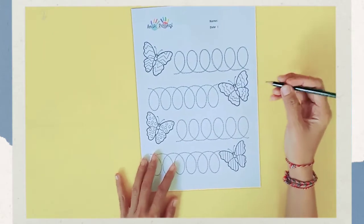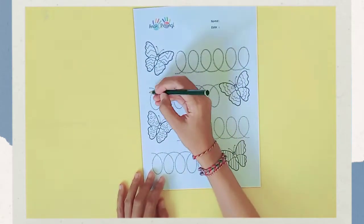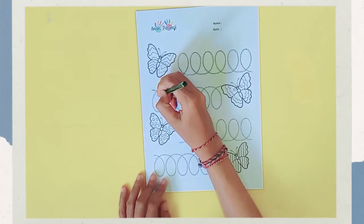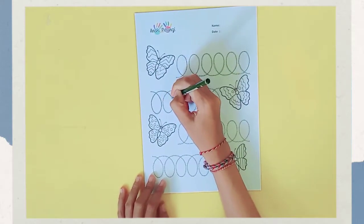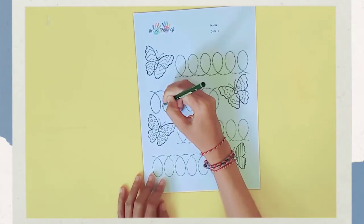Okay, next, the second butterfly. This one is from the top and then go down to make an oval.